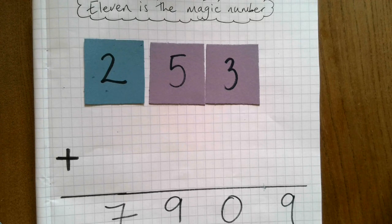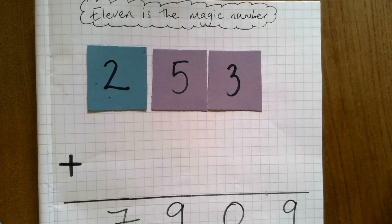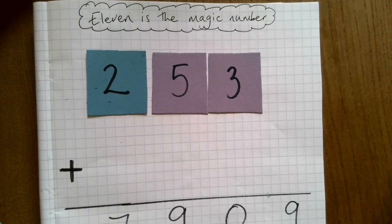Or maybe you'd like to try it with five-digit numbers, maybe six-digit numbers, maybe 30-digit numbers, and see what happens. See if 11 always is the magic number.